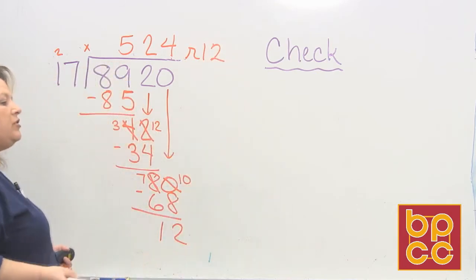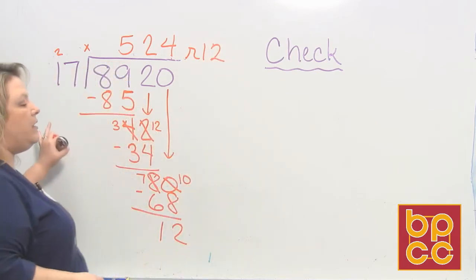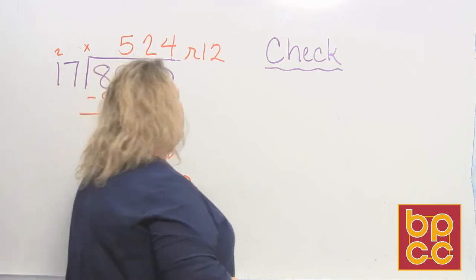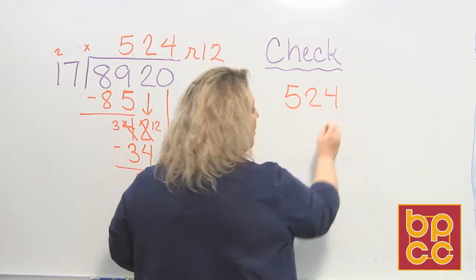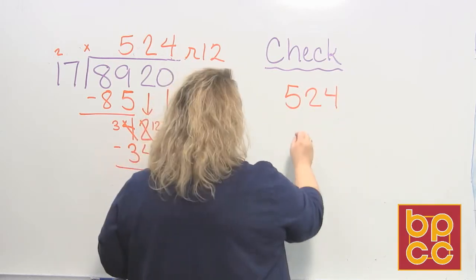Now, in order to check and make sure that we did this correctly, we're going to multiply, and that's 524, our quotient, our answer that we got, times 17.